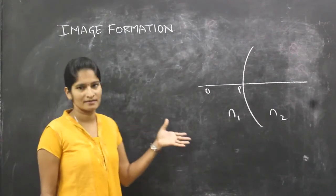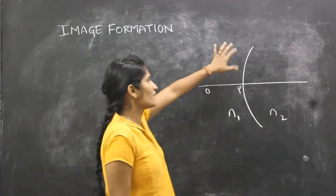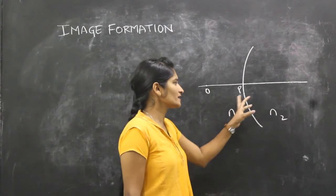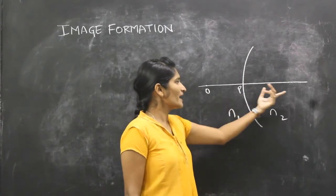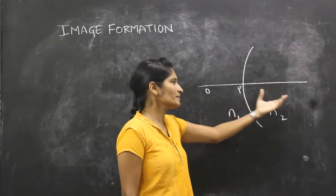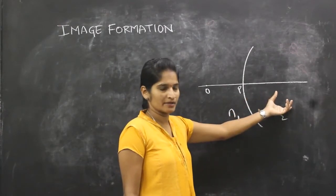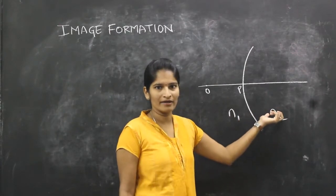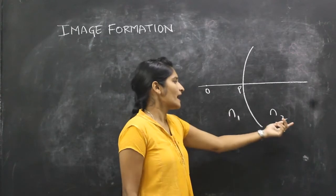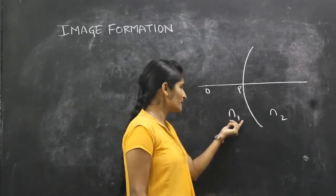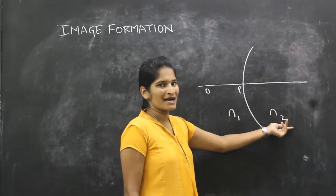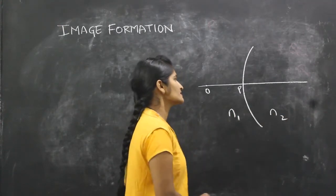Here we will consider this case. I am taking a surface which is separating the two mediums. Consider this as a rarer medium and this as a denser medium. Each medium will have their own refractive indices. So let their refractive indices be n1 and n2. Medium one has n1 refractive index and the other medium has n2 as refractive index.